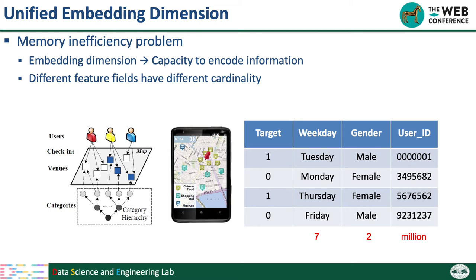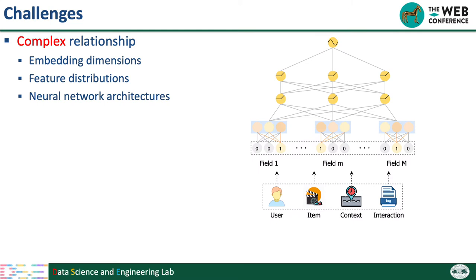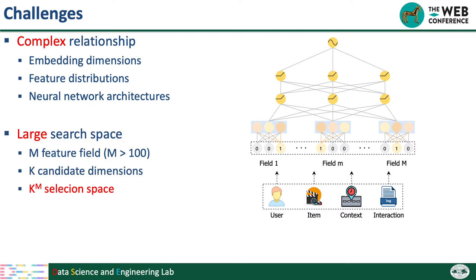However, this task is also very challenging. The first challenge is that the relationship among embedding dimensions, feature distributions, and neural network architectures is very complex — they are highly dependent on each other. If we change one, others will also change, making it harder to manually adjust embedding dimensions. Another challenge is that real-world systems often contain hundreds of feature fields. If we assign k candidate dimensions to each field, the total search space is m to the power of k — a very large search space making manual selection very expensive.